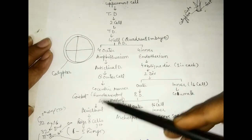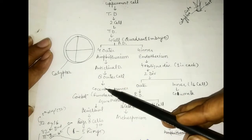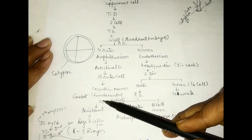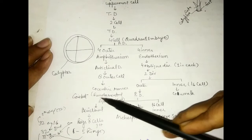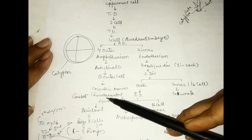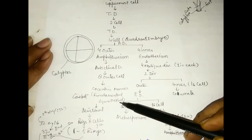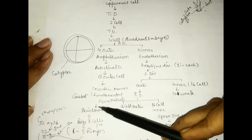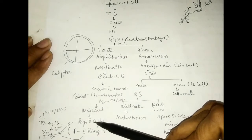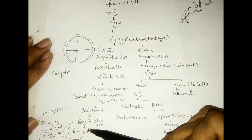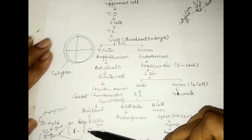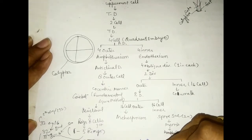The outer cells are arranged in a concentric manner. There is division, and a scientist — Goebel — named this the fundamental square method. There is a periclinal division and the formation of eight rings. These rings are linked to form five rings, with 32 cells each forming these rings.